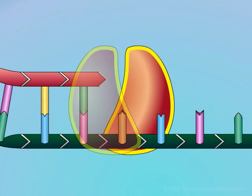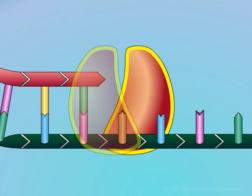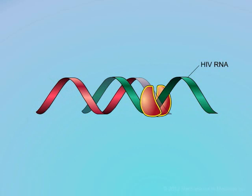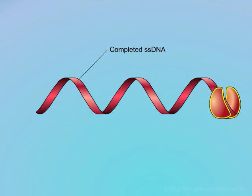Hence, such a mutated RT can now reject some of the NRTI nucleoside analogs and this will permit the synthesis of viral DNA to continue. The reverse transcriptase enzyme can now complete the transcription of viral RNA into single-stranded DNA.